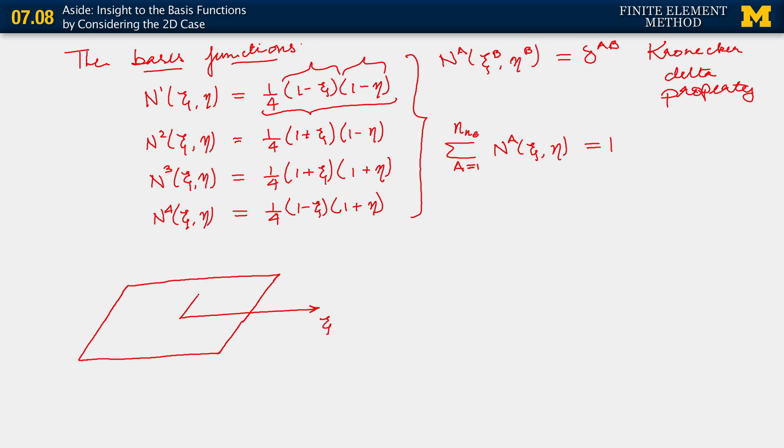Those are our coordinate directions, xi and eta. Our local node numbers are A equals 1, 2, 3, and 4. What I'm trying to signify here is that each of these node numbers has been written on a plane that is below the plane of the actual element itself, of the subdomain. That is our origin, xi and eta equals 0.